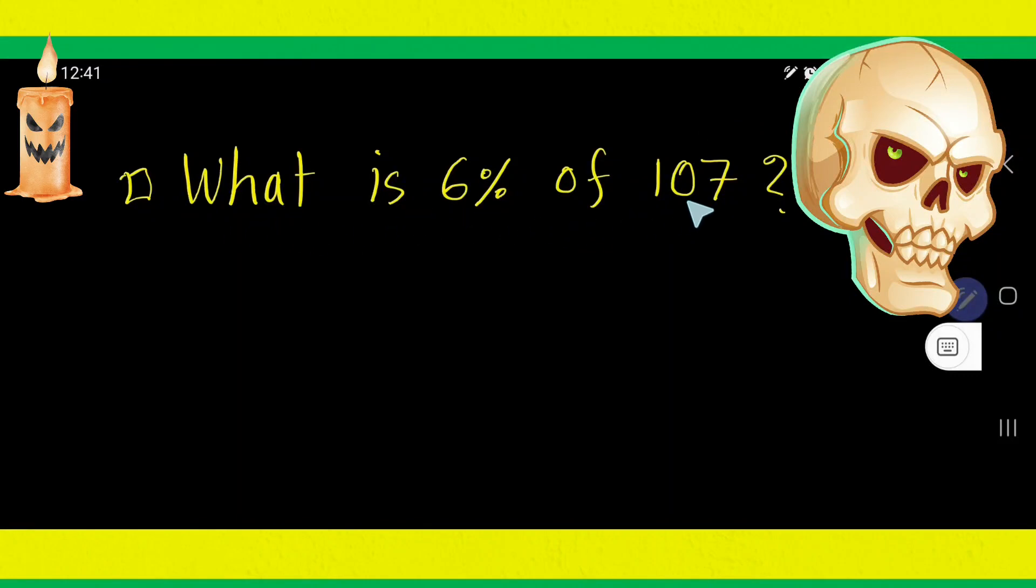What is 6% of 107? Let n equal 6% of 107. 'Is' means equal sign, 'of' means multiplication. So n = 6% × 107.